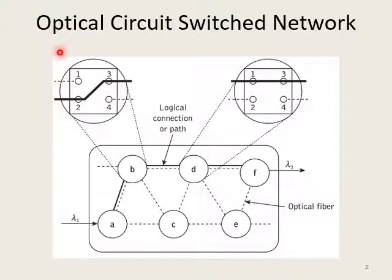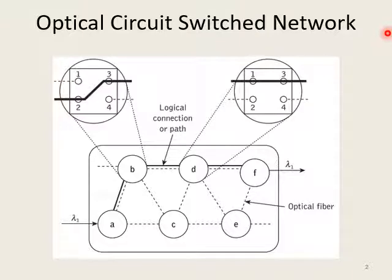An optical switching network switches data between different ports of a network. Switching can be in electrical or optical form, but here we are considering only optical switching. Under optical switching network, there are two types: optical circuit switched and optical packet switched.